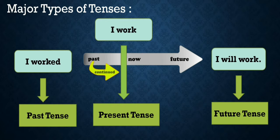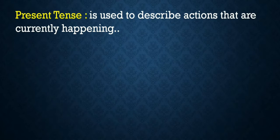While writing a sentence, you need to know when to use present tense, past tense and future tense. Present tense is used to describe actions that are currently happening.